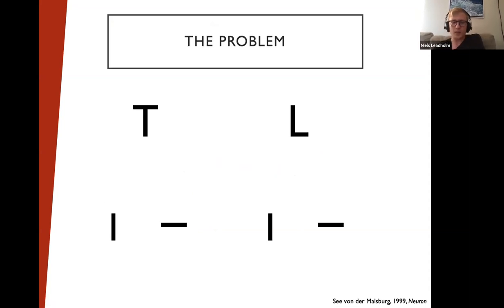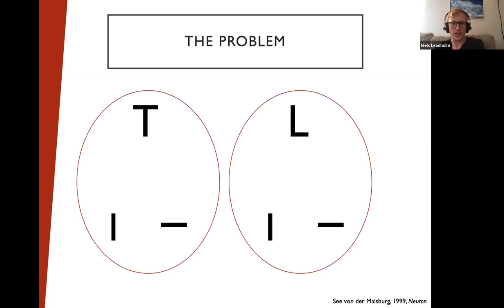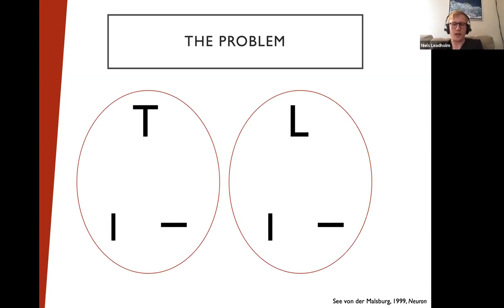This particularly comes up when looking at multiple stimuli simultaneously. For example, how do we understand that a particular vertical and horizontal bar compose the T here, but the same primitive features in different locations are composing an L over there? There's a rich history of different proposed solutions to this problem, but today I'm going to focus on this particular hierarchical question.